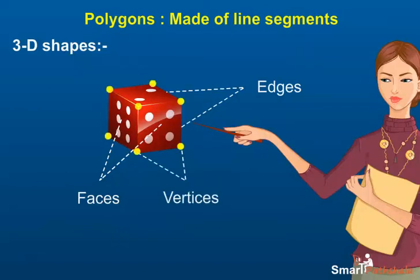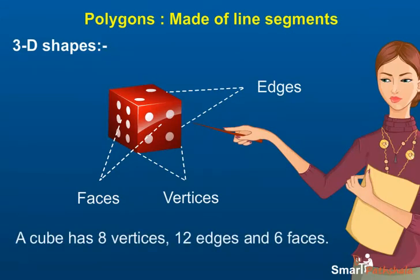Vertex: when three or more faces meet at one point, that point is called a vertex. A cube has eight vertices, twelve edges, and six faces.